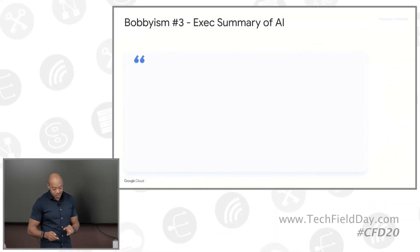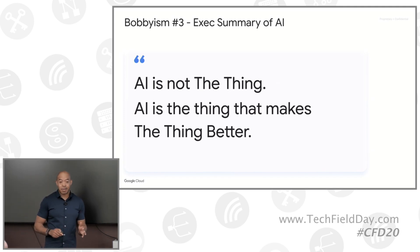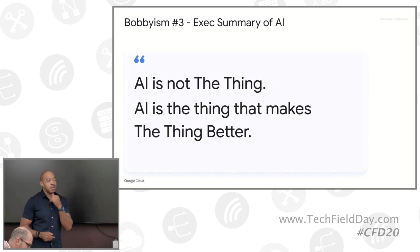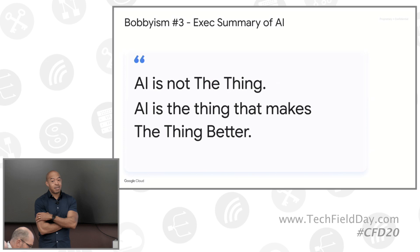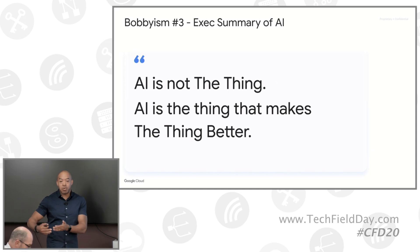I'd love to give you my executive summary around where I think AI is in context today. Here it is: AI is not the thing. AI is the thing that makes the thing better. If this were food, AI is not the dish — AI is the sauce or the spice that makes the dish better. The dish typically is the application or the use case for the customer where we're solving a problem to make something better.